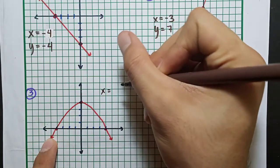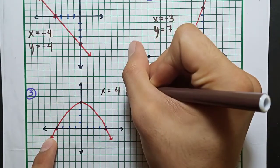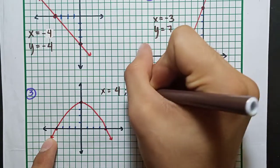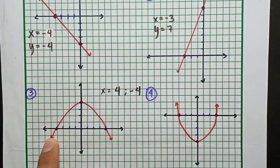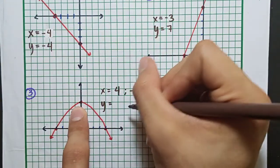They are at x equals 4 and negative 4. Then the y-intercept is at y equals 4.